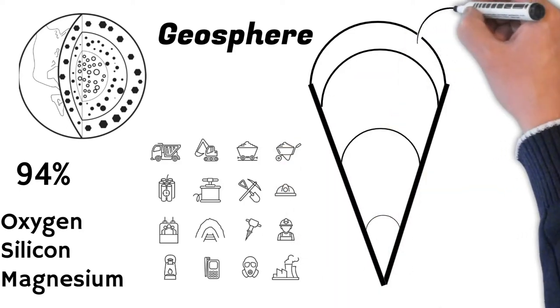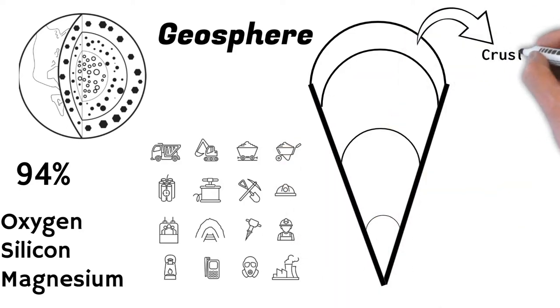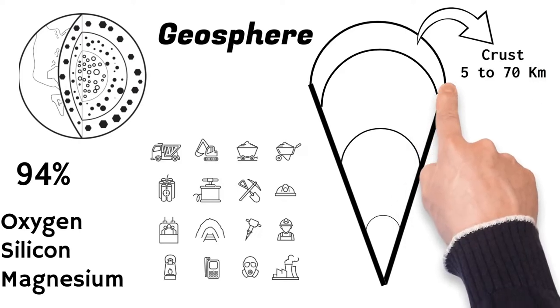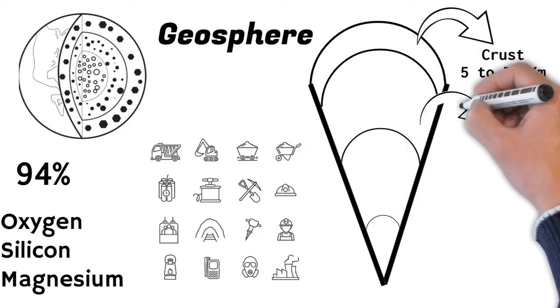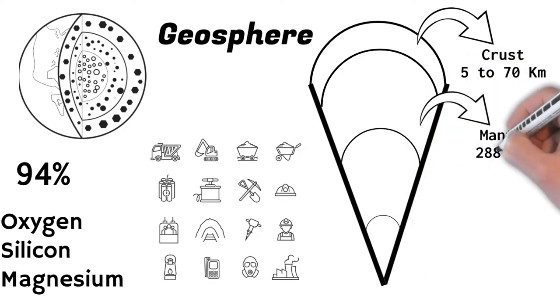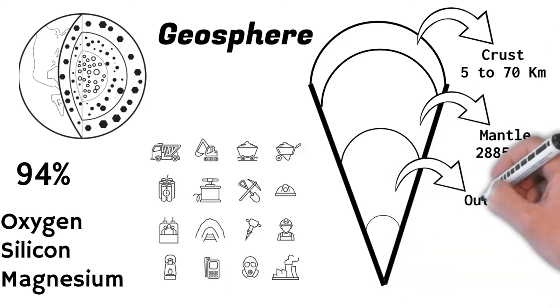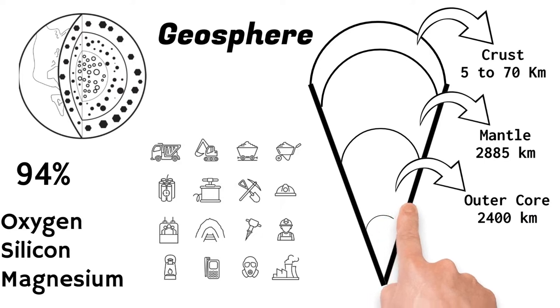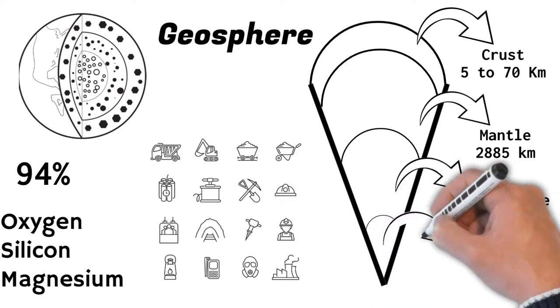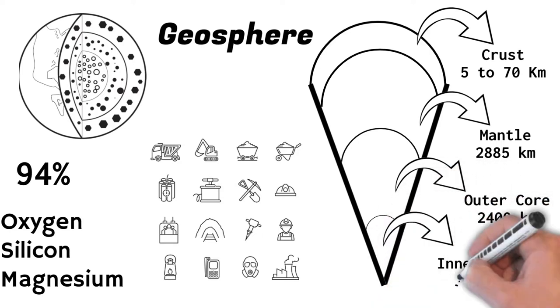If we see different layers of Geosphere, from the surface of the Earth from 5 to 70 km we call it crust. If we go below then 2,885 km we call it mantle and below that 2,250 km is the outer layer and then we have the final inner layer which is 960 km.